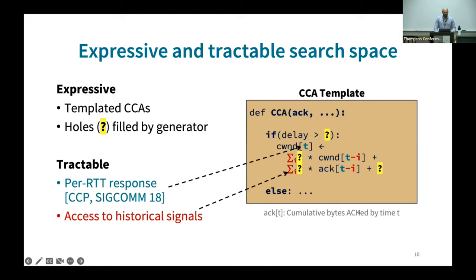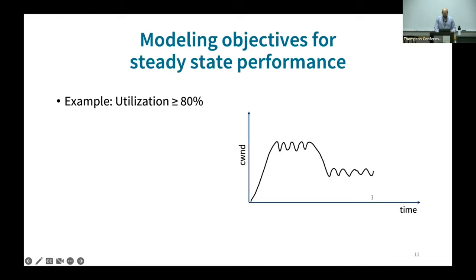Our templates capture the signals and actions that existing CCAs consider, but differ in two key ways. First, typical CCAs respond to every acknowledgment; instead, our templated CCAs respond on every RTT. Prior work has shown such CCAs are competitive with existing ones. Second, typical CCAs may store state to make future decisions; instead, we give direct access to a small bit of historical signals. Both features vastly simplify the complexities of our mathematical models, keeping our search space tractable.